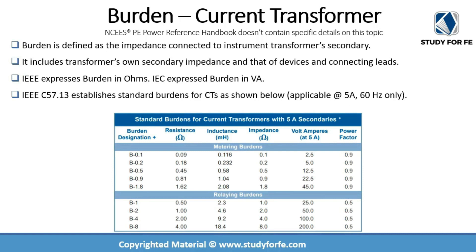IEEE standard C57.13 establishes standard burden ratings for CTs, which are shown in this table. An important point to remember is that these ratings are applicable for 5 amps and 60 hertz systems only. So these are standard CT burden ratings with 5-amp secondaries.